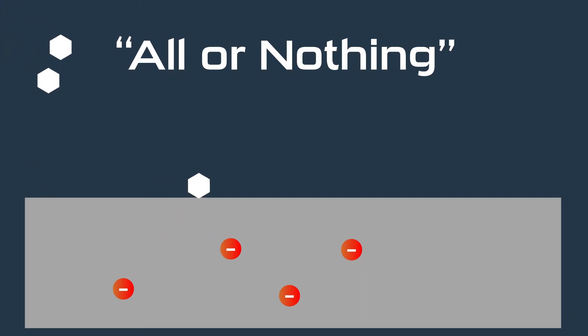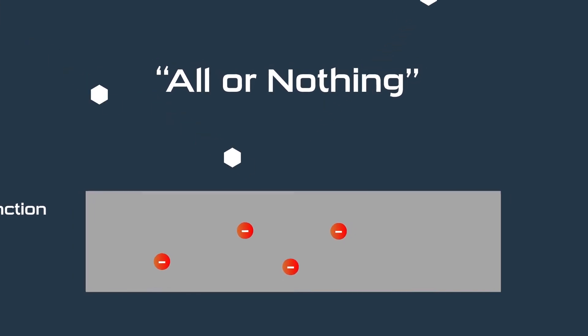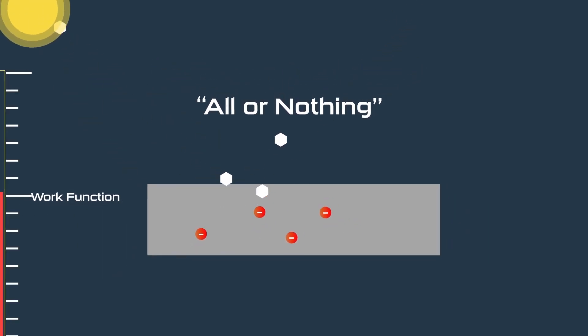If energy of the photon is equal or greater than the work function of electron, then the electron absorbs that energy. But if energy of the photon is less than the work function of the electron, then it does not absorb that energy at all.